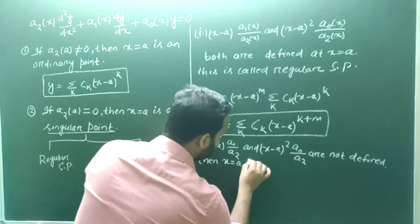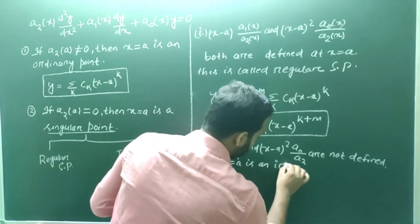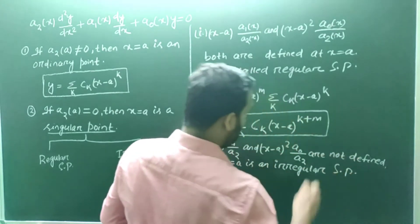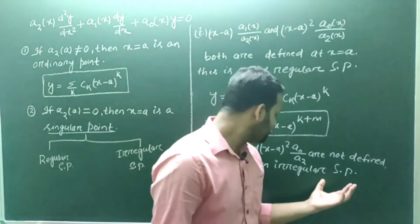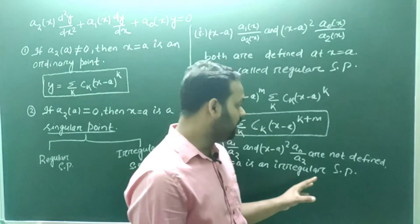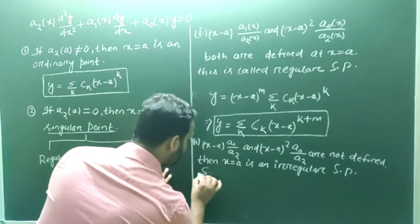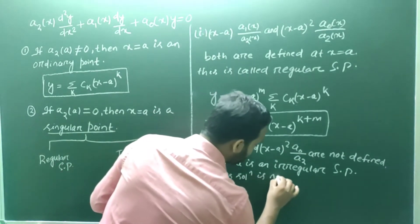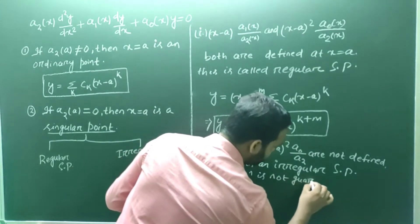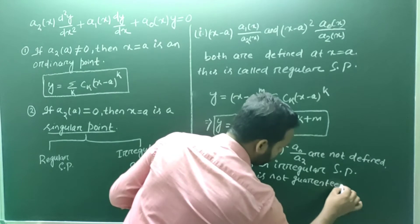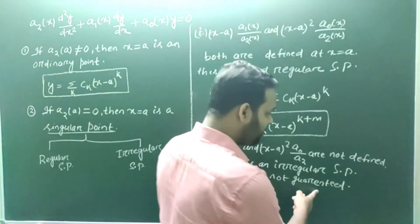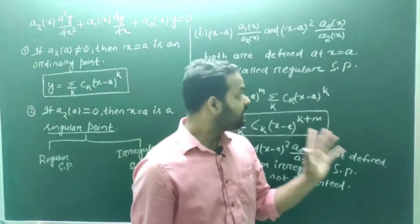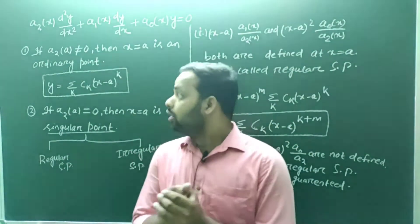The second case: when a₂(a) = 0, but both the terms (x − a)·a₁(x)/a₂(x) and (x − a)²·a₀(x)/a₂(x) are not defined at x = a, then x = a is called an irregular singular point. For an irregular singular point, the series solution is not guaranteed.